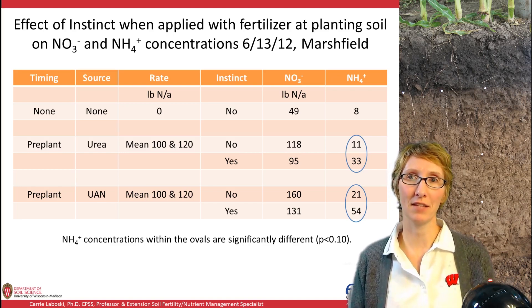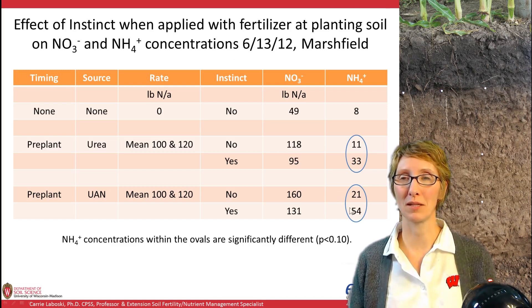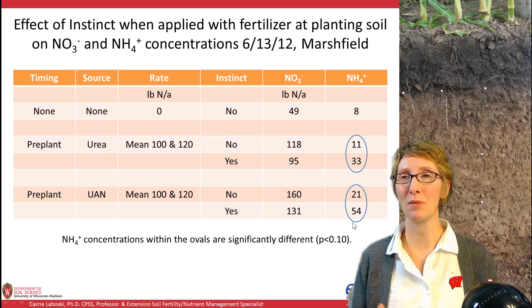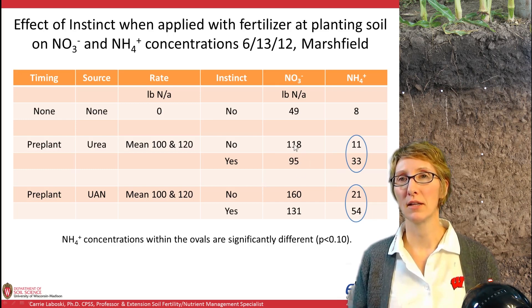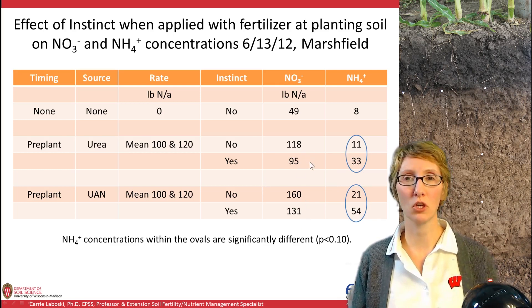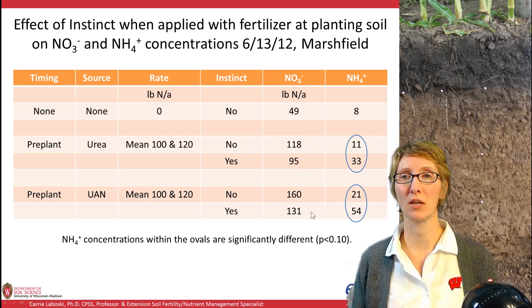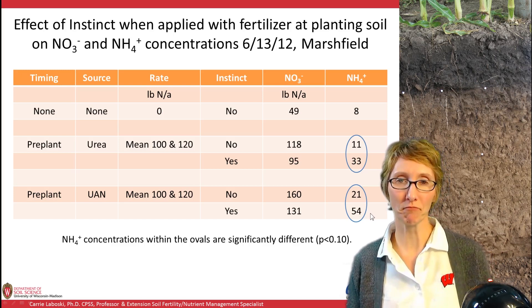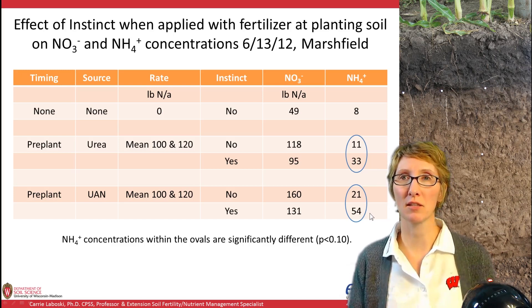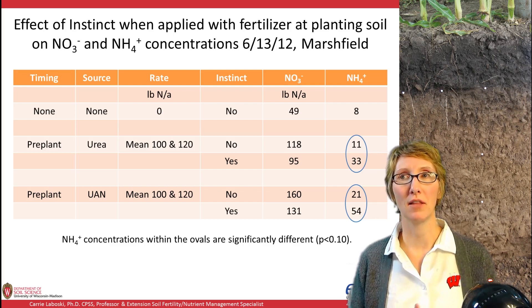There are no significant differences in soil nitrate concentrations in this one-foot soil sample at pre-sidedress timing. However, looking at ammonium, there is a significant increase where Instinct was applied with urea and also with UAN — Instinct is holding the nitrogen in the ammonium form, doing what it's supposed to do. So if events occur that would cause leaching or denitrification losses, we've got more of it in the ammonium form. We can do studies like this to verify that a product is working, even if yield benefit depends on the weather.